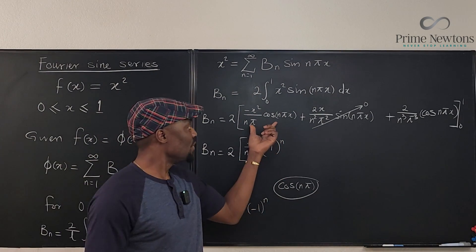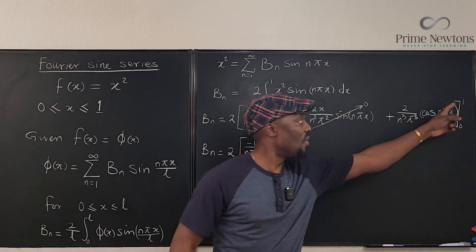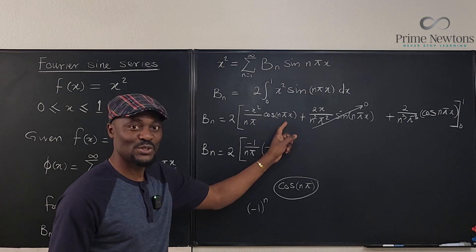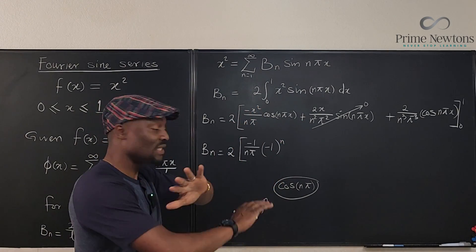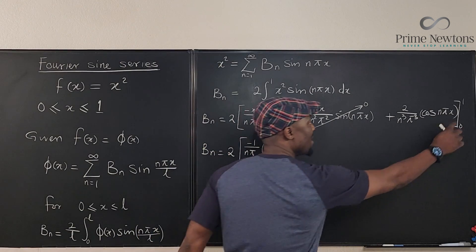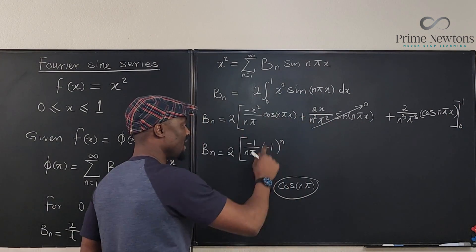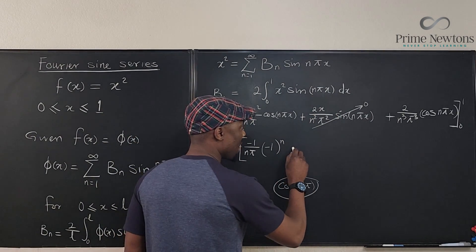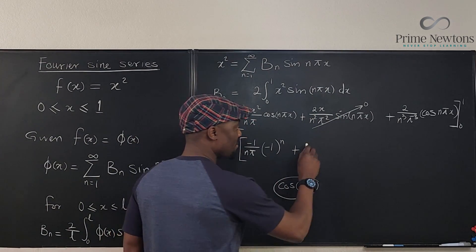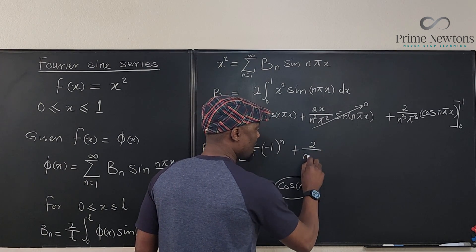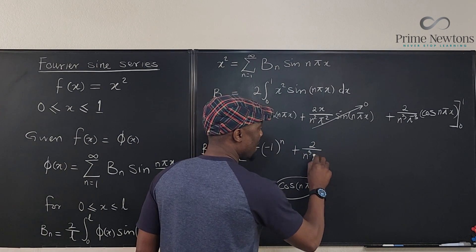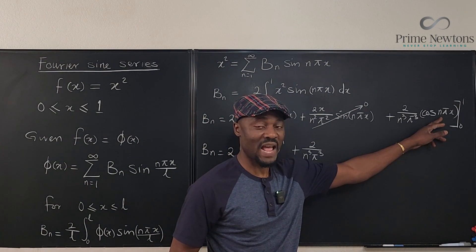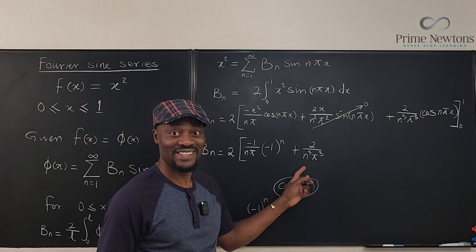We just evaluated this at 1. Let's evaluate now at 0. If you plug in zero here, it doesn't matter what you do, this zero is going to delete everything. Now let's move on to this one. It's going to be plus 2 over n cubed pi cubed. The only part we need to deal with is this part because this is what has x.